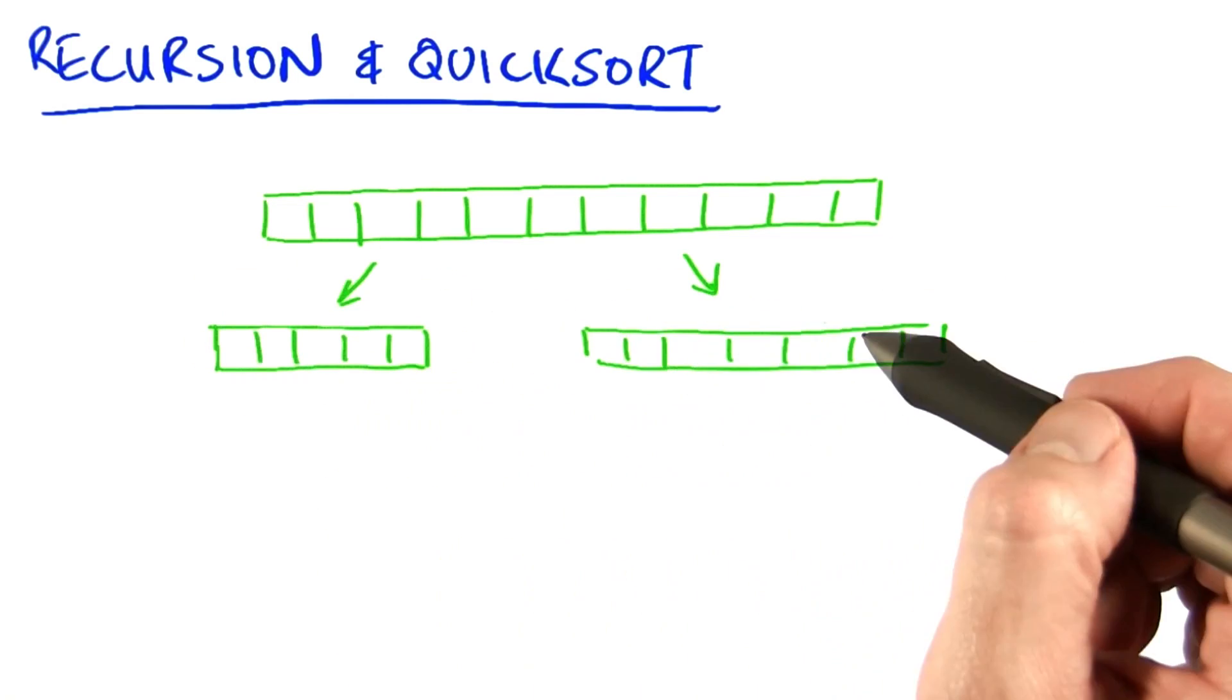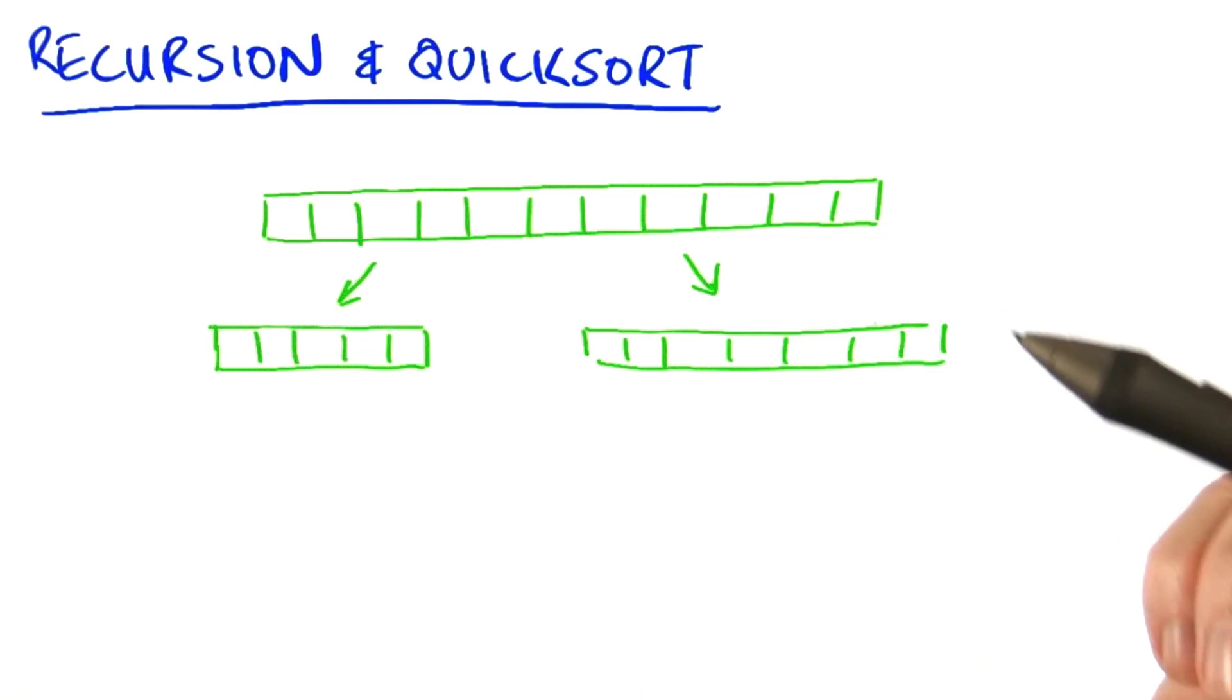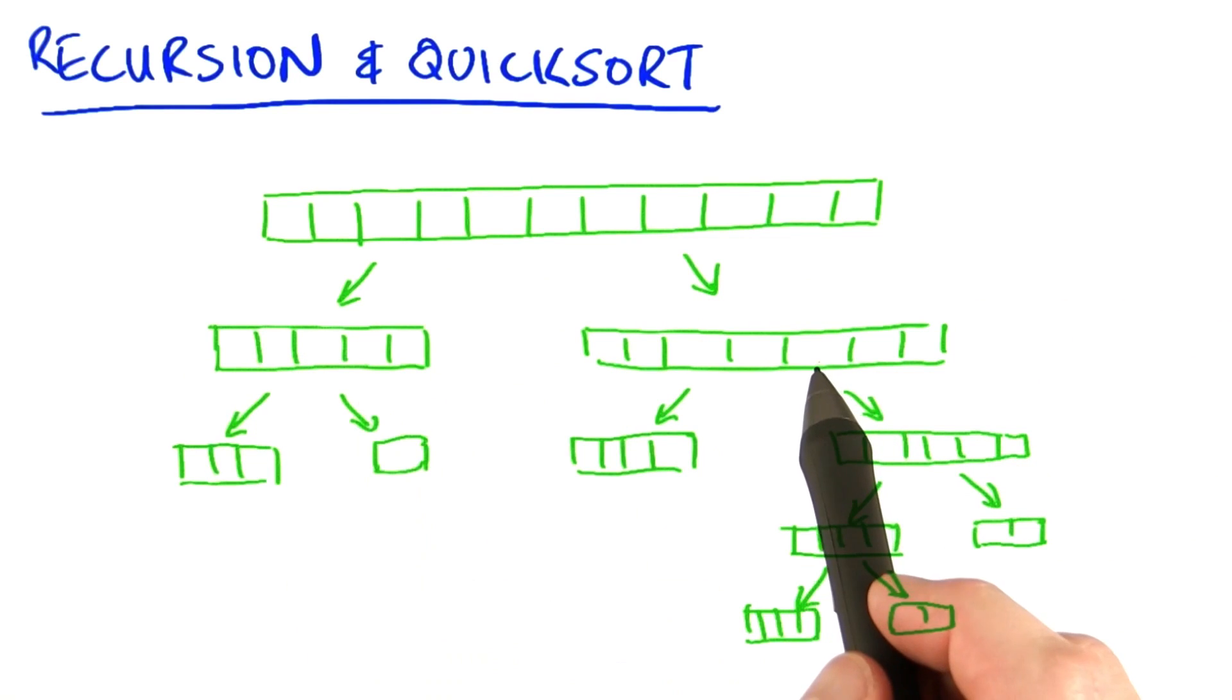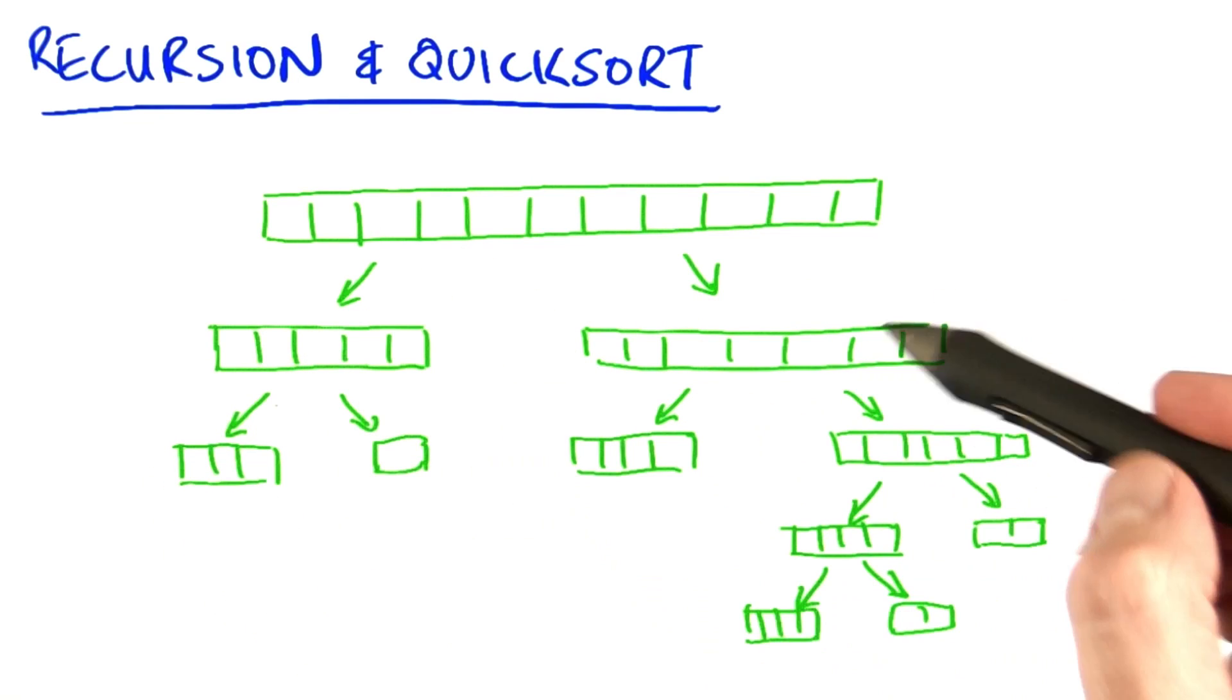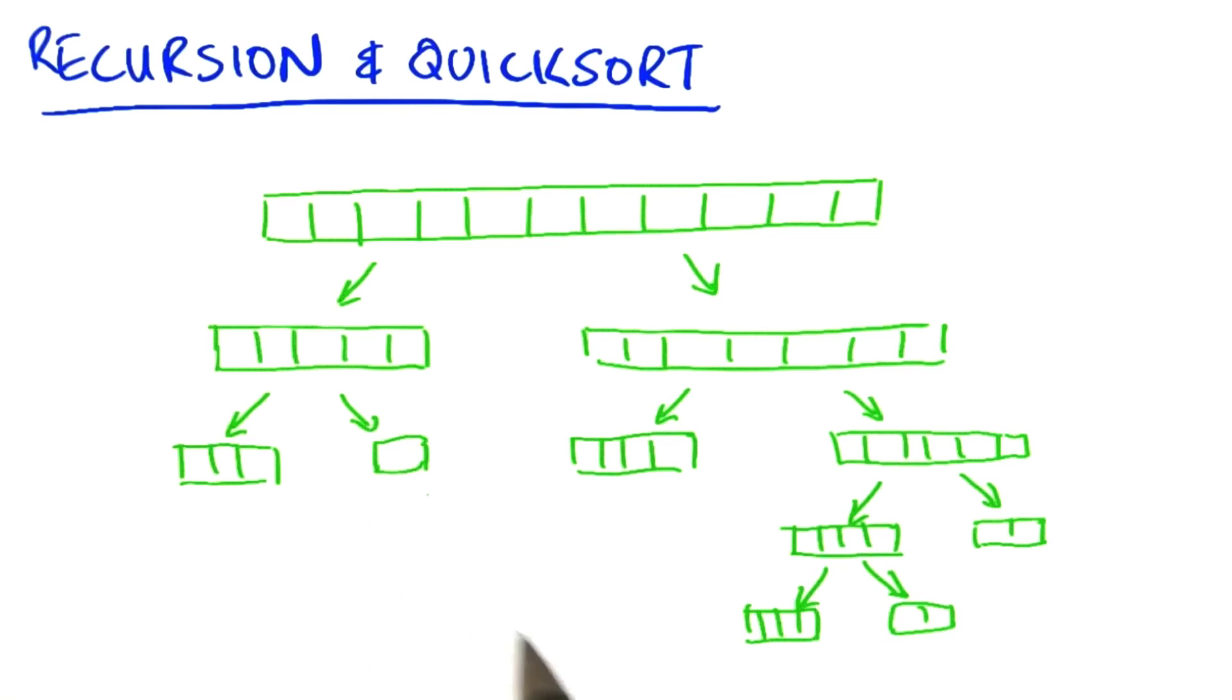You then call quicksort on each subpartition, which is why it's a recursive algorithm. These subpartitions then get repartitioned over and over again recursively. And so you end up at the end with single values, and you're done.